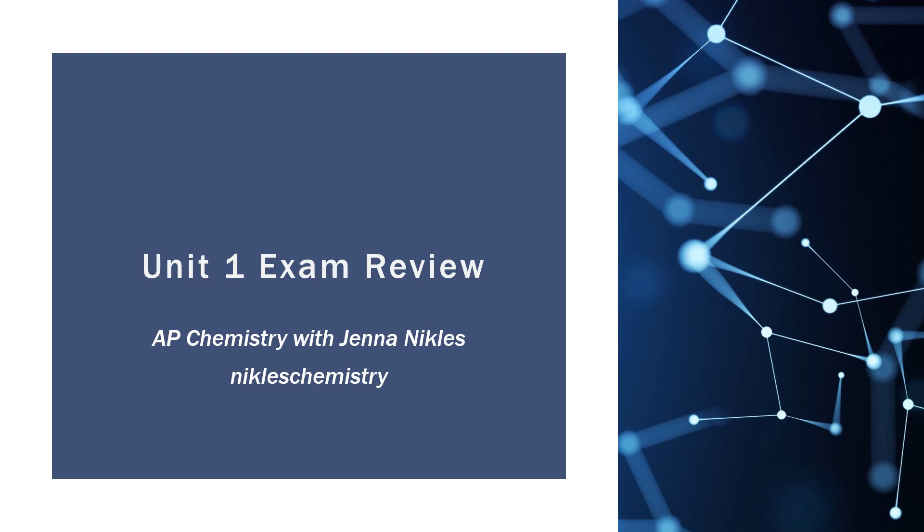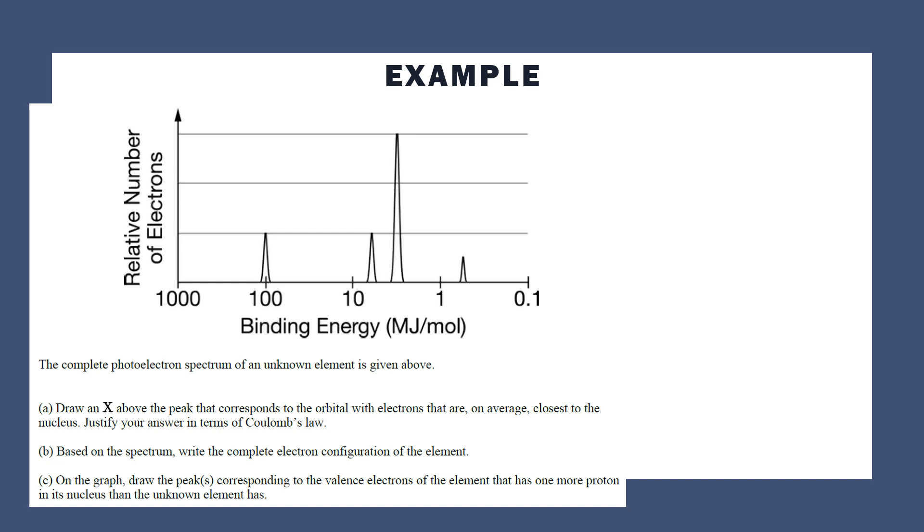Hello, today we're going to review for the AP exam by doing some practice problems from Unit 1. Remember that Unit 1 has both the mole concept and atomic structure in it. So here's an example from an old AP exam, a free response question. We have a complete photoelectron spectrum (PES) of an unknown element. It says draw an X above the peak that corresponds to the orbital with electrons that are on average closest to the nucleus and justify your answer in terms of Coulomb's Law. The way I approach these problems is whichever peak has the highest binding energy is the closest to the nucleus.